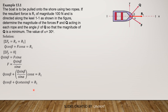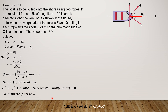We have Q times negative sine beta plus cosine beta times Q prime plus Q cotangent alpha times cosine beta plus sine beta times Q prime cotangent alpha equals 0. To minimize Q, we need to set Q prime, the derivative of Q with respect to beta, equal to 0. So we have Q times negative sine beta plus Q cotangent alpha cosine beta equals 0.